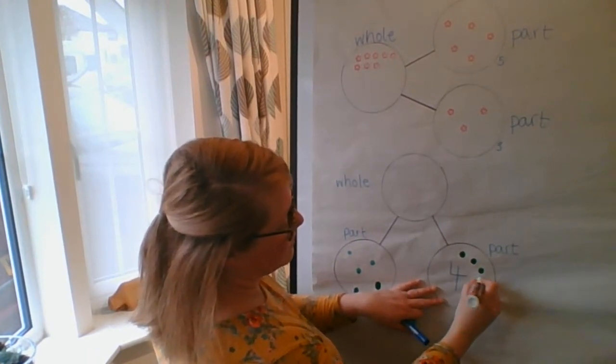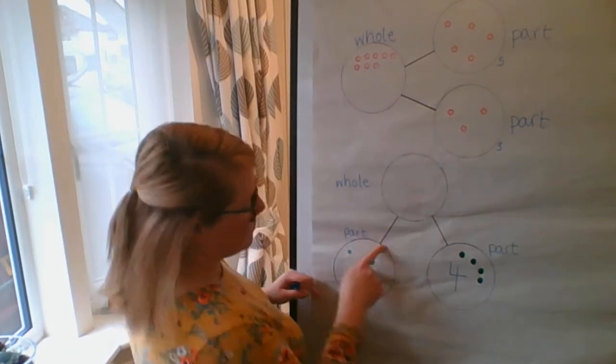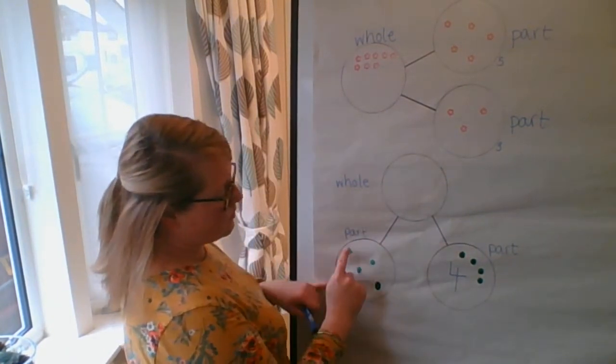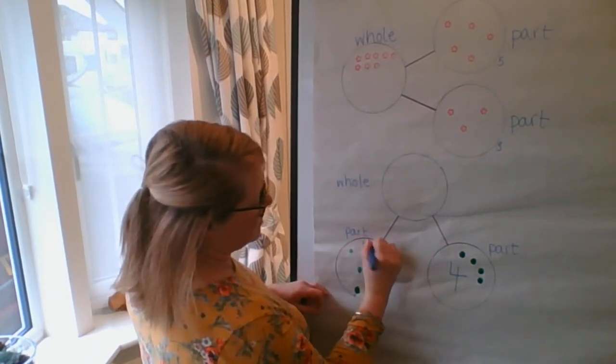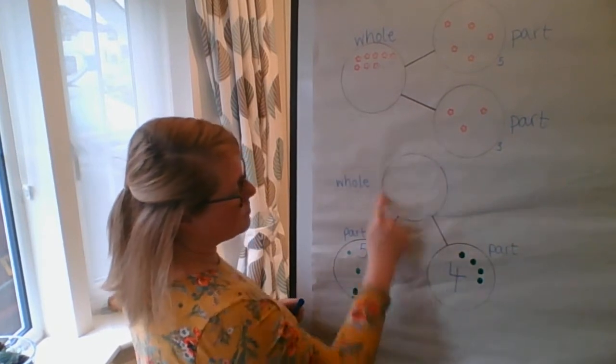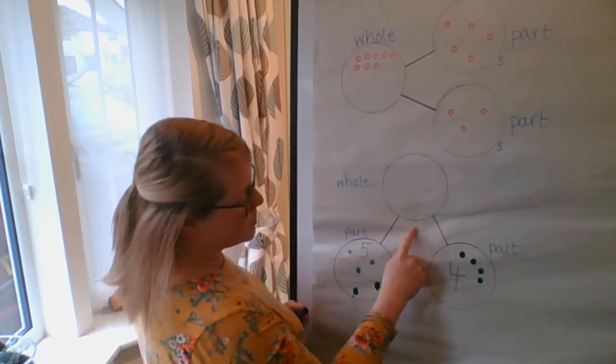So I'm going to, one, two, three, four. I'm going to put four dots there. And it might be helpful if I put a numeral in here. So I've got one, two, three, four, five dots here. So I'm going to write that. So the total is five and four. So what could I do?